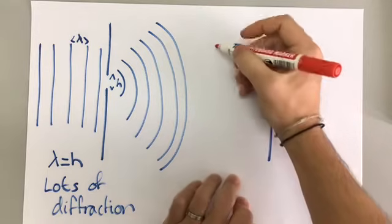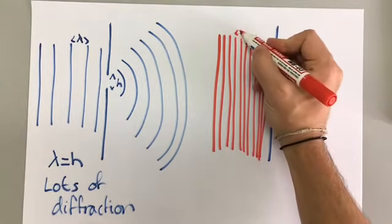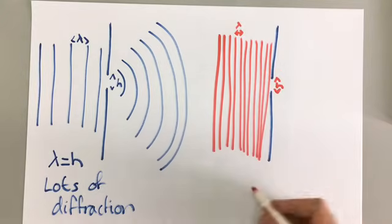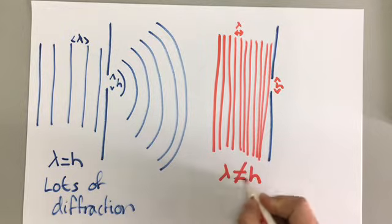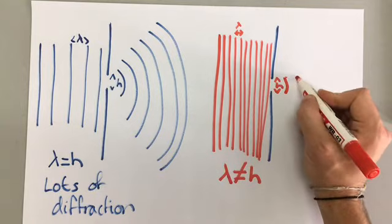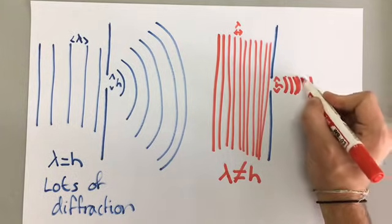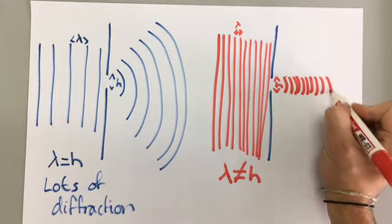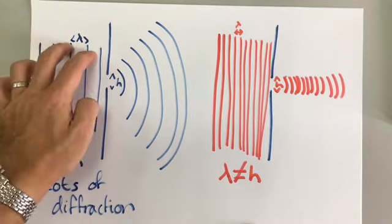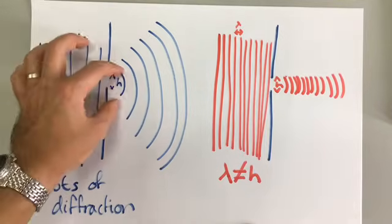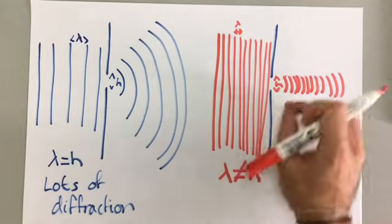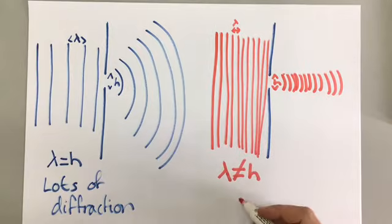However, when the wavelength is different to the size of the gap, when the wavelength is not the same as the size of the gap, there is only a small amount of diffraction. So if the height of the gap is the same as the wavelength or similar, then there will be a lot of diffraction. And if the height of the gap is not the same as the wavelength, they're very different, there will be not very much diffraction.